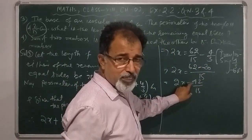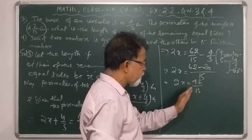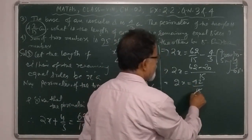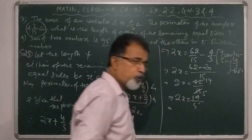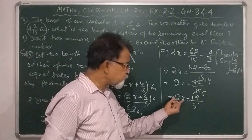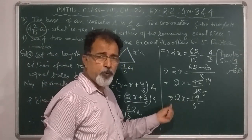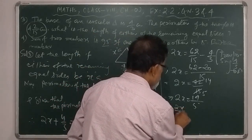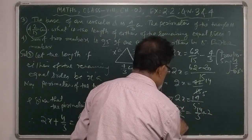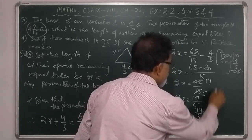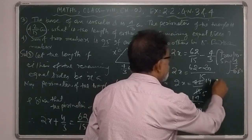We express the right hand side in its simplest form. These two numbers have a common factor of 2, giving 2x equals 14/5. To find the value of x, we divide both sides by 2. So x equals 14/5 divided by 2, which equals 14/10, that is 7/5 cm. Therefore the length of each equal side is 7/5 cm.